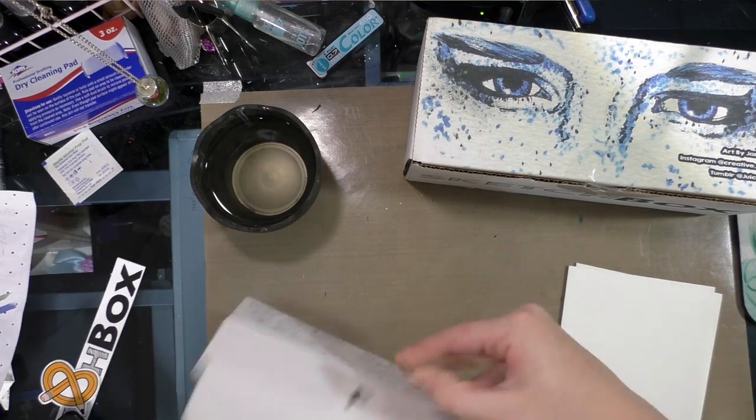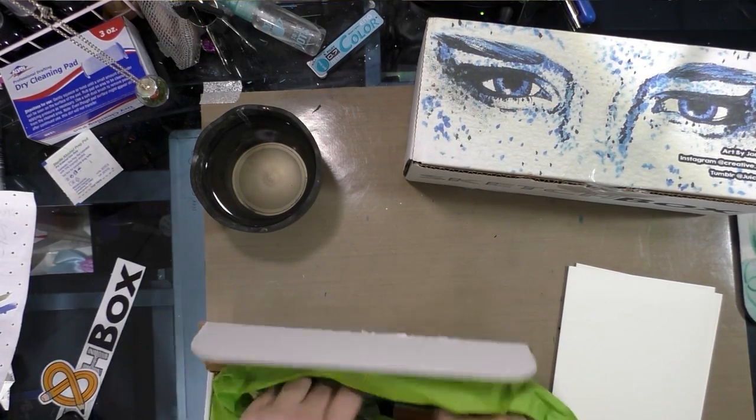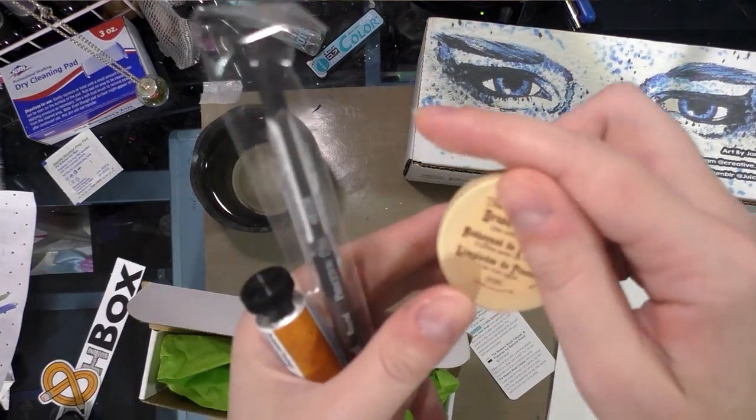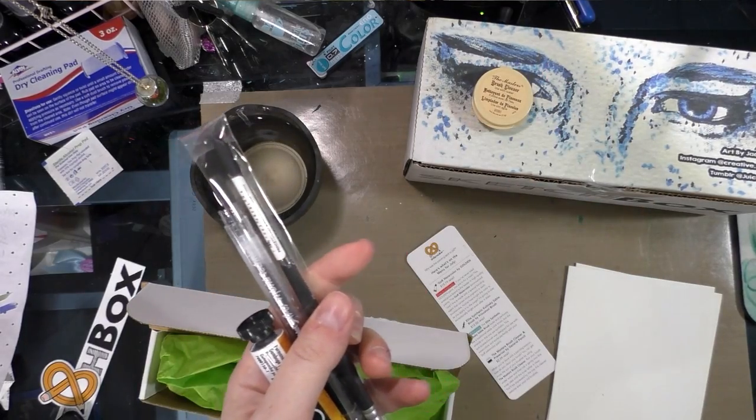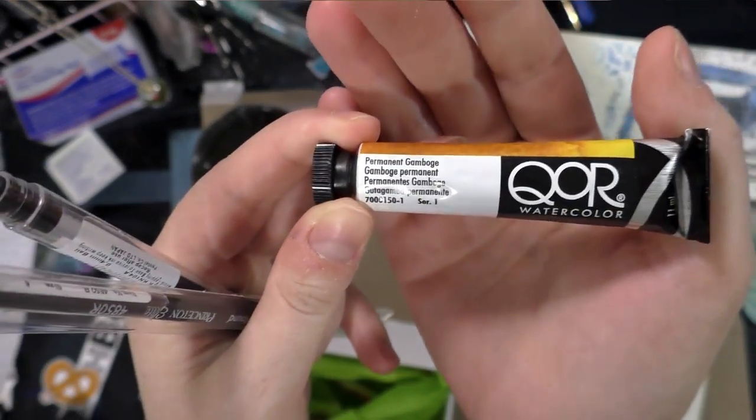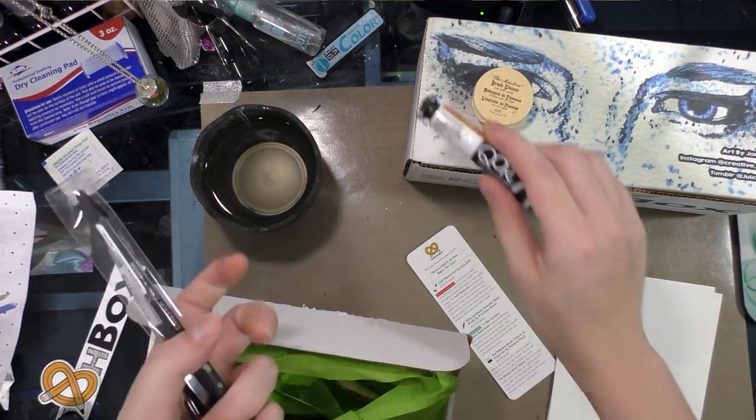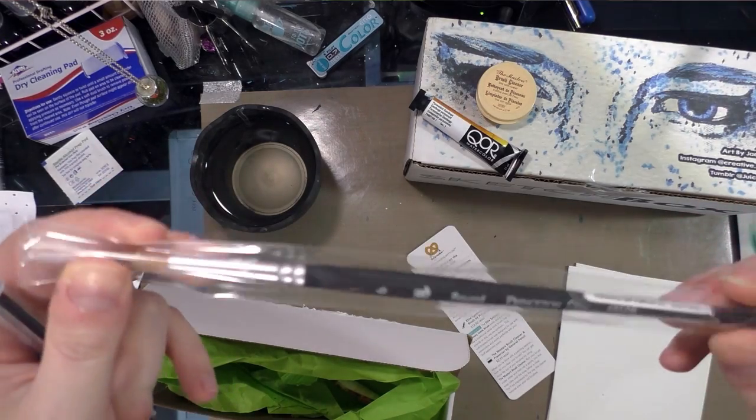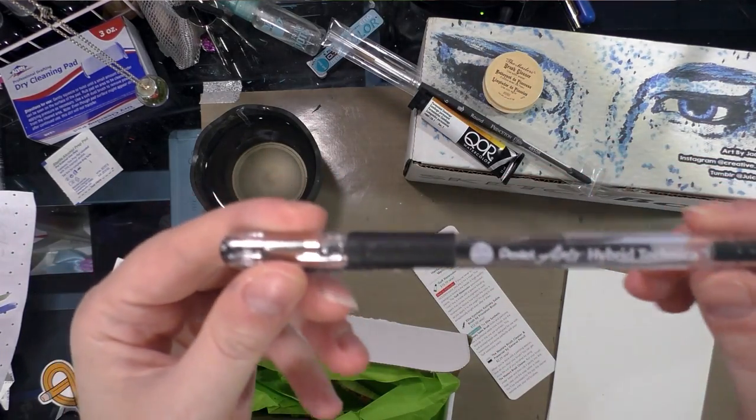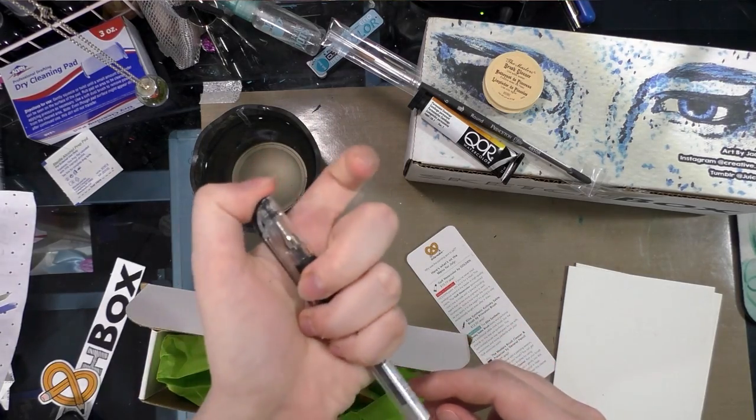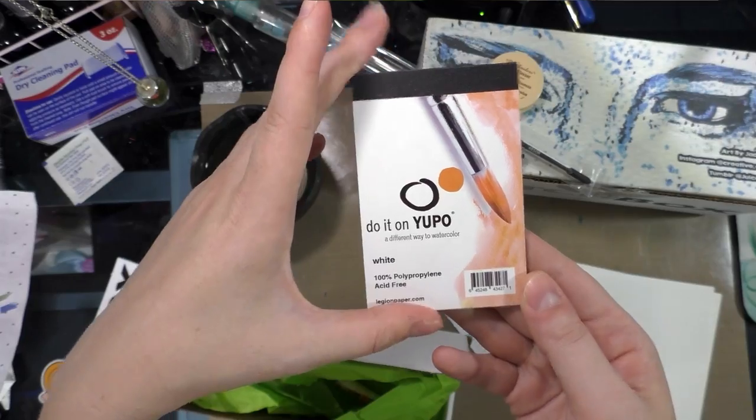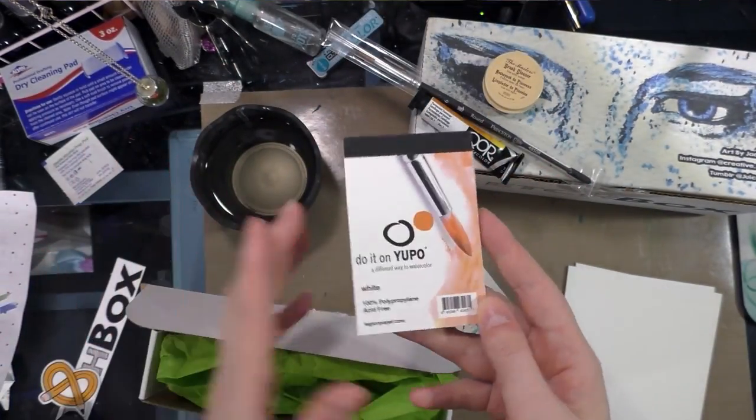We're going to start now with our ArtSnacks, going over the prices and demonstrating the materials. In this month's ArtSnacks we got a little container of the Masters Brush Cleaner, a tube of core watercolor paint in permanent gamboge, a Princeton number six Round synthetic brush, a Pentel Arts Hybrid Technica gel pen, and the world's tiniest pad of Yupo, which is a synthetic polypropylene paper that doesn't absorb water.